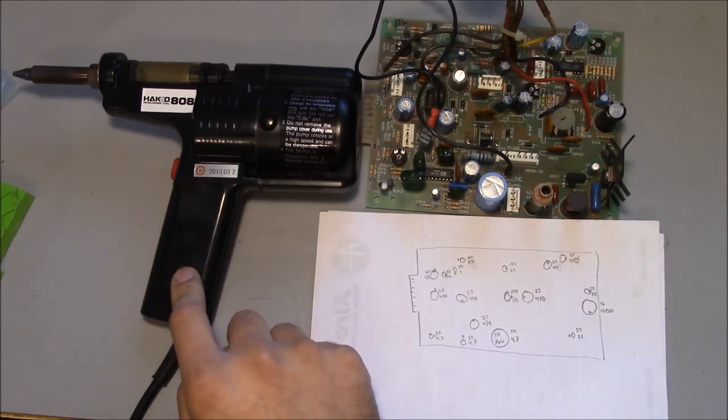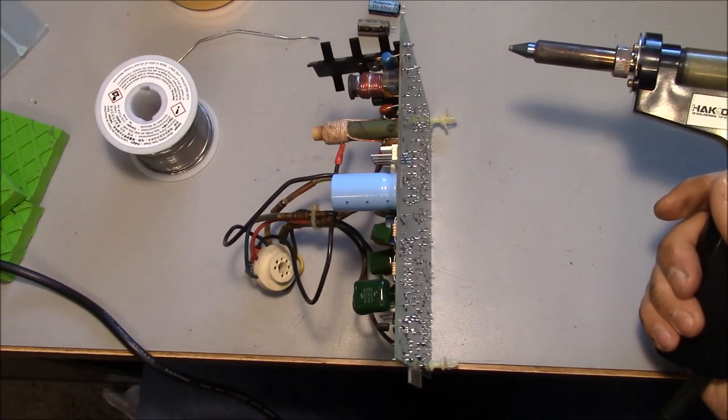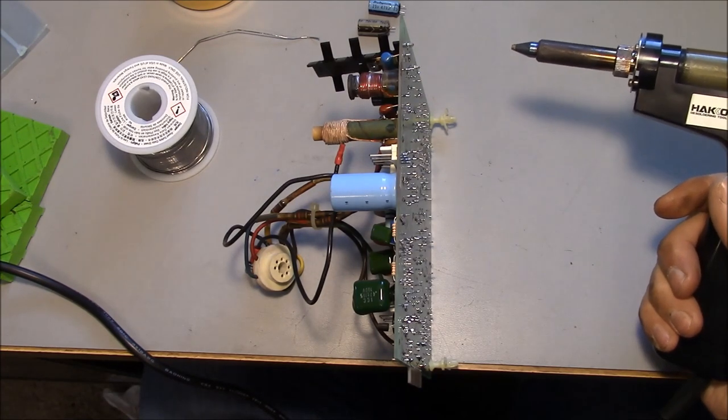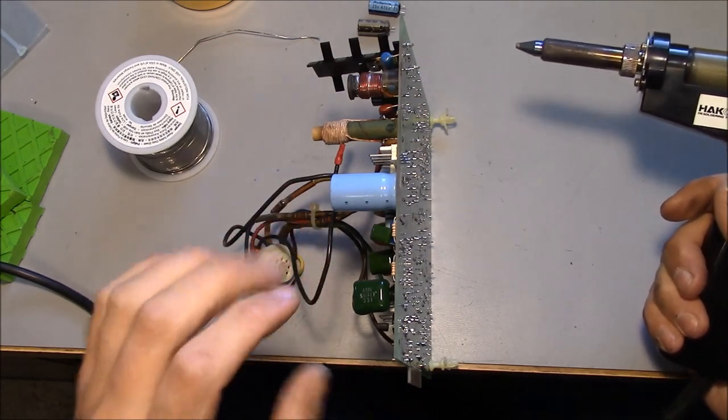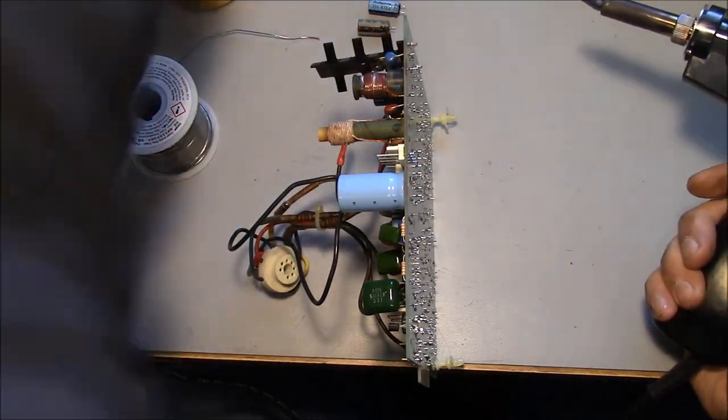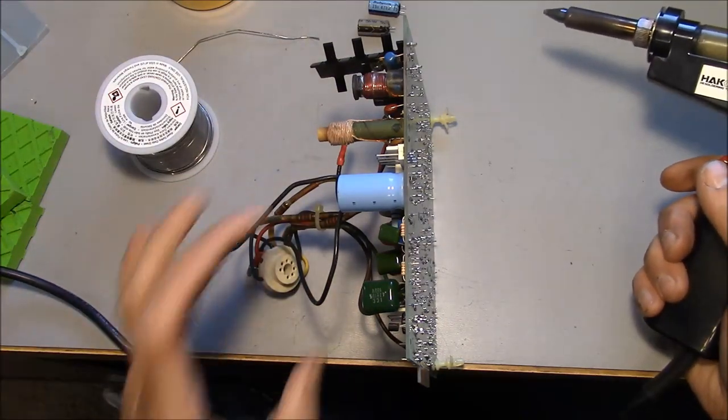I'm using this Heiko 808 desoldering tool and it's got a one millimeter tip. This is a single-sided circuit board so it's really easy to unsolder or desolder. And I just put a little bit, a tiny little bit of this RMA flux on any spot that I'm gonna be desoldering just because it helps the solder flow a little bit better.